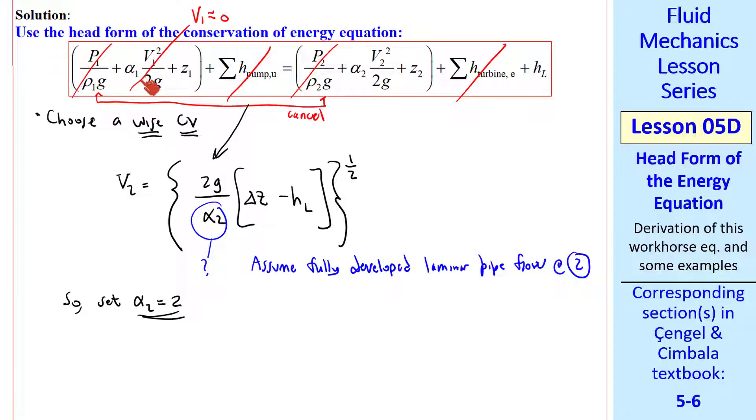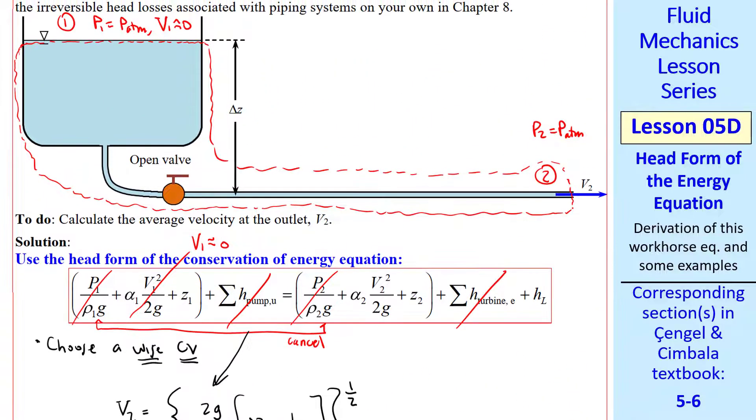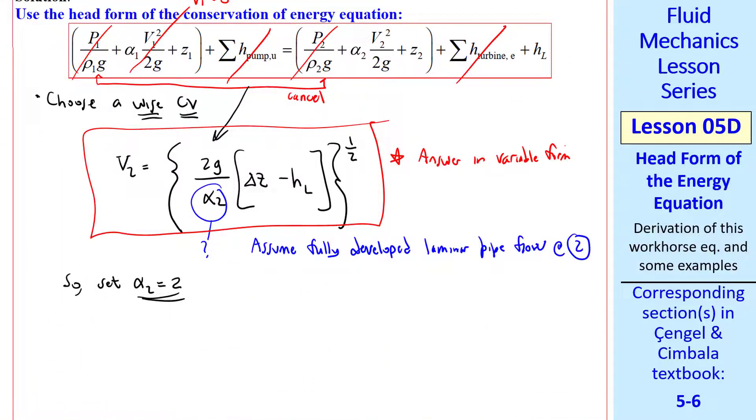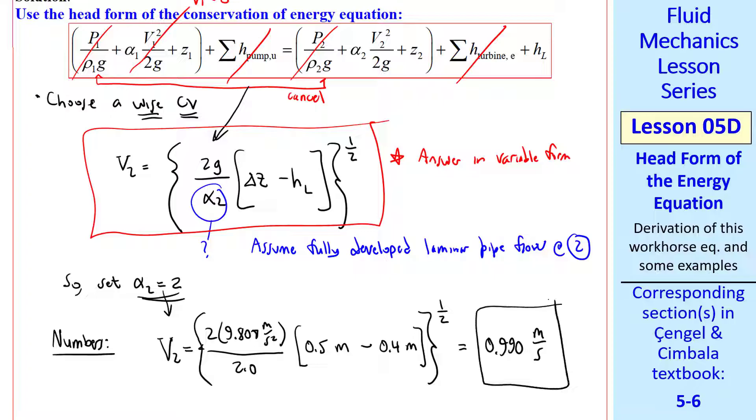But what is alpha 2? Let's assume fully developed laminar pipe flow at 2. This is a good approximation, since this is such a long pipe, so the flow gets fully developed. Whether it's laminar or turbulent, we'll be able to tell later on in the course by calculating the Reynolds number. But for now, let's just assume it's laminar pipe flow. So we set alpha 2 equal to 2. Quick comment here, we don't even need alpha 1, because this term has gone away. This would be a situation where the inlet speed is nearly uniform across here. So alpha 1 would be 1 or very close to 1, but we don't even need it. By the way, this is our answer in variable form. We plug in the numbers using alpha 2 equal 2, 2G over 2.0, 0.5 meters minus 0.4 meters, the whole thing to the one-half power, which gives us 0.990 meters per second. So that's our final answer.